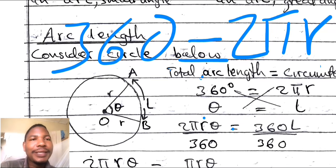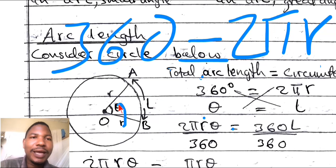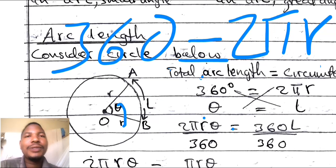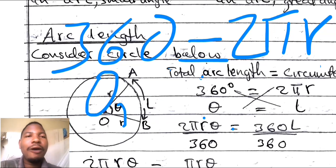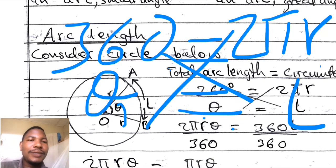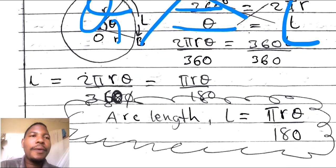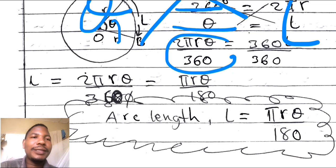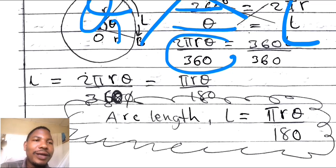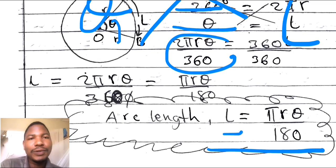How about the length of a certain arc with a subtended angle theta? How can you find the length of arc AB with a subtended angle theta? You set up a proportion: for 360 degrees the arc length is 2πr, and for angle theta the length is L. By cross multiplication, you will find that L equals 2πrθ over 360. Then by simplification, you will find L equals πrθ over 180. This L is what we call the arc length.